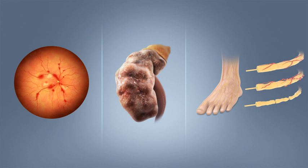The term mellitus, or from honey, was added by the Briton John Rollo in the late 1700s to separate the condition from diabetes insipidus, which is also associated with frequent urination. Effective treatment was not developed until the early part of the 20th century, when Canadians Frederick Banting and Charles Herbert Best isolated and purified insulin in 1921 and 1922. This was followed by the development of the long-acting insulin NPH in the 1940s.